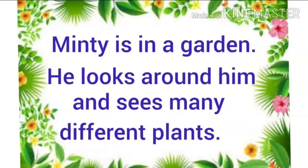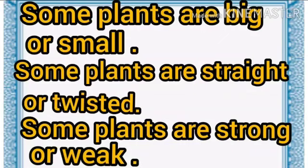Minty is in a garden. He looks around him and sees many different plants. Minty is standing in the garden and he can see different kinds of plants. Some plants are big or small. Some plants are straight or twisted. Some plants are strong or weak.